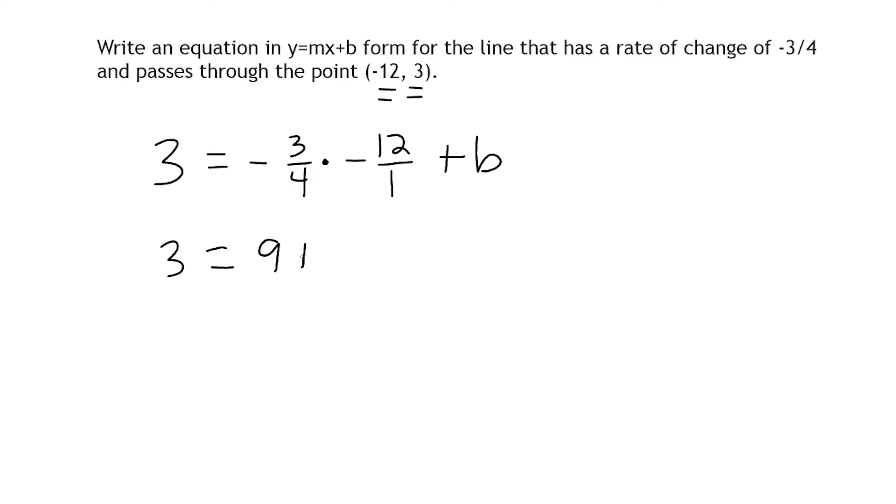Now we just have to add something to 9 in order to make 3. Now of course the only thing you can add to 9 to make something smaller than 9 would be a negative number. So we already know that b is going to be a negative number.